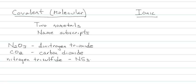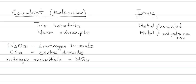The harder one is ionic. It's not that ionic is hard; it's just that it has multiple parts to it. When we talk about ionic, we are talking about a metal with a nonmetal, or a metal with a polyatomic ion. If you are ionic, we never name subscripts — that's the big difference. And to write the formula, we balance charges.